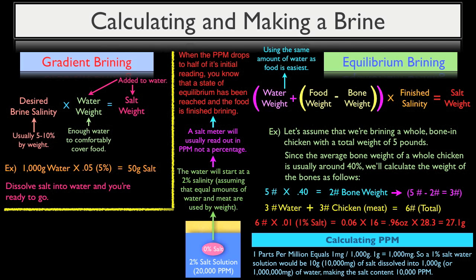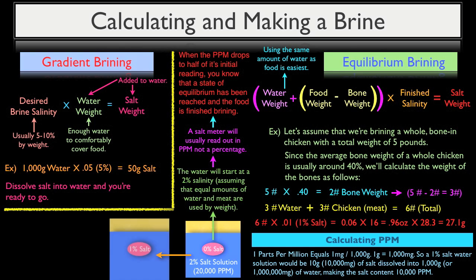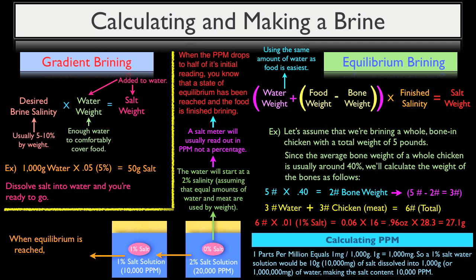So when our equilibrium brine, which in our example would technically have an initial reading of 2% or 20,000 parts per million, drops to 1% or 10,000 parts per million, which is half of the original reading of 20,000 parts per million, we now know that the chicken is also at 1% salinity on the interior of the meat. And now an equilibrium has been achieved and the brining process is complete.